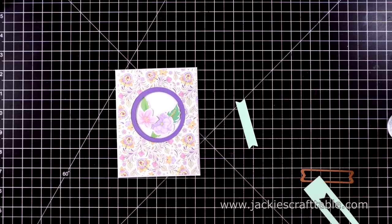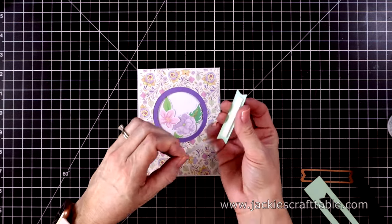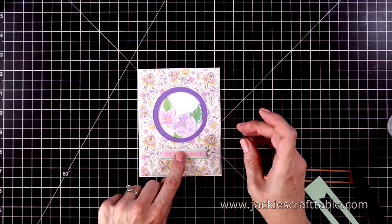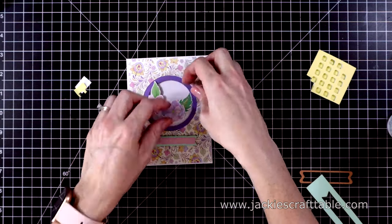The sentiment, I'm going to mat with some green cardstock and pop it up with some foam strips and put that under the window. And then I decide to pop up the flowers with some foam squares.